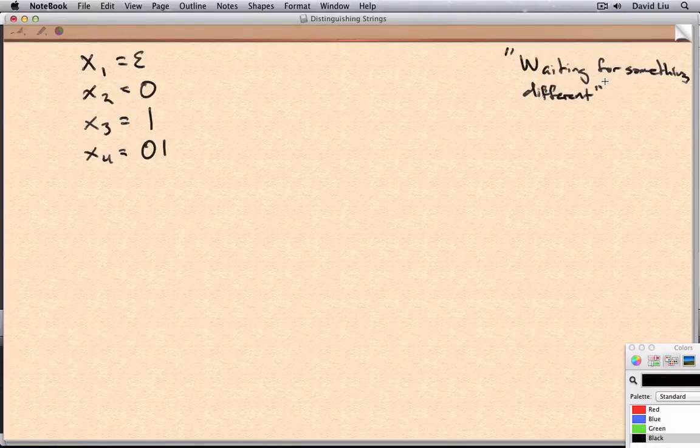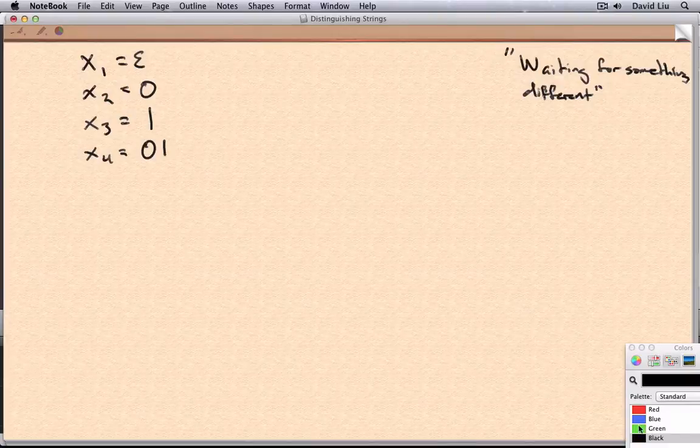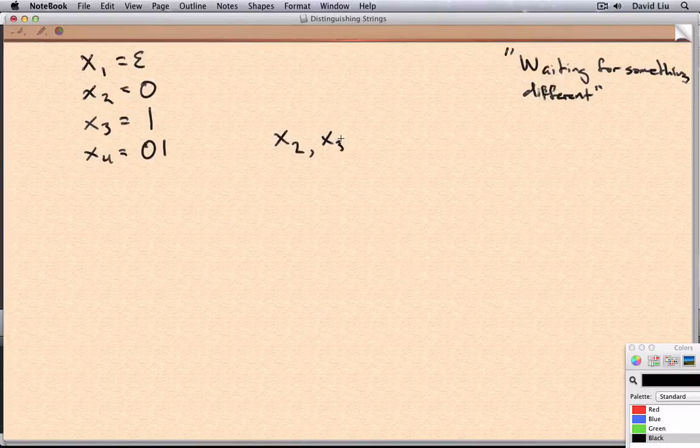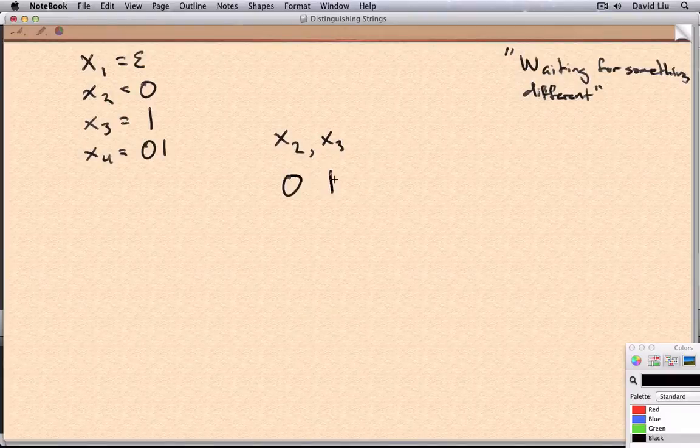So in this video, I'm not going to do all six pairs. I think I'll do two. So let's pick X2 and X3. So that is, we're trying to distinguish between 0 and 1.